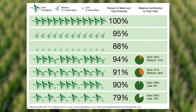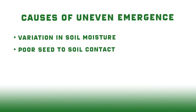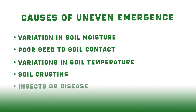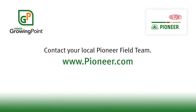Several factors can lead to uneven emergence. These include variation in soil moisture, poor seed to soil contact due to working or planting into wet soil, variation in soil temperature caused by uneven crop residue distribution, soil crusting, and insects or disease. Contact your local Pioneer team if you have questions regarding corn stand evaluations and visit our page on pioneer.com.